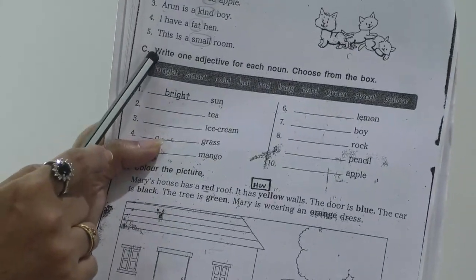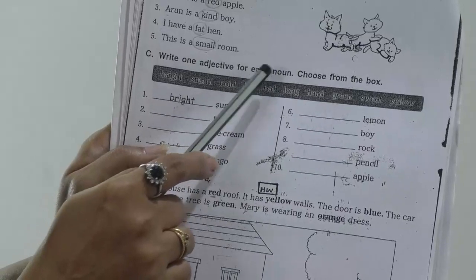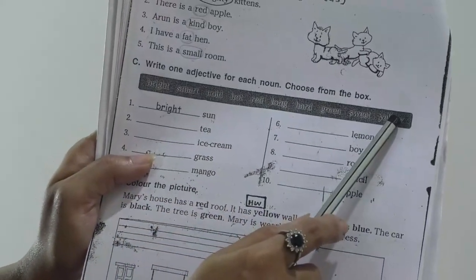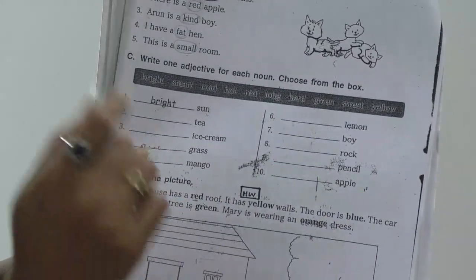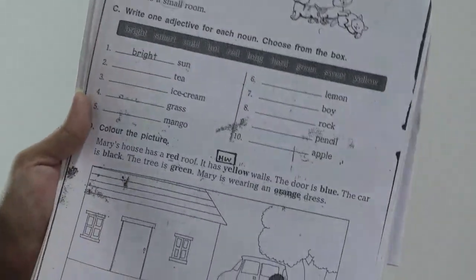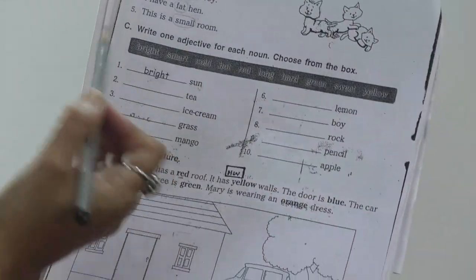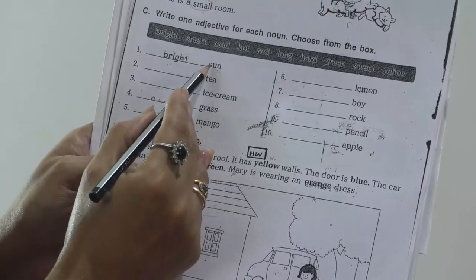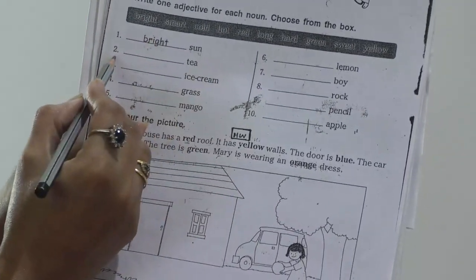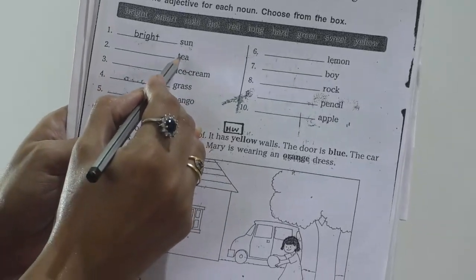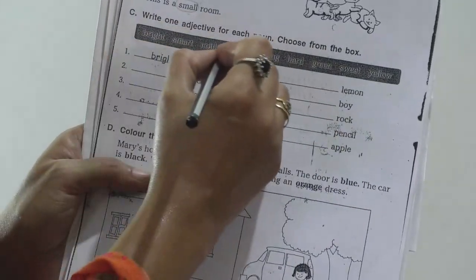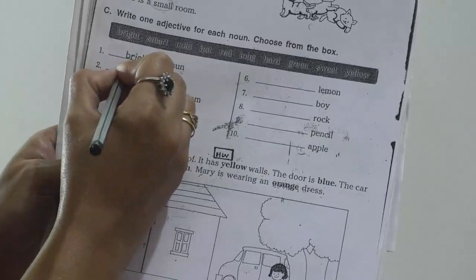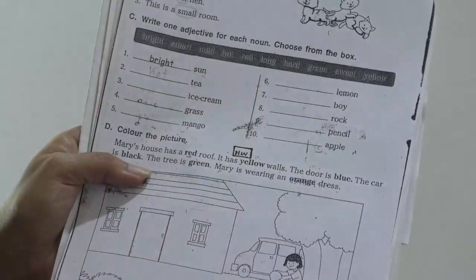After that, next question. Write one adjective for each noun. Choose from the box. Here is one help box and you have to use a correct or suitable adjective for the noun. Let's start. The first example already is solved here. Bright sun. How is the sun? Sun is bright. Next example, dash tea. Which adjective is suitable here? How is the tea? Hot we can say here. Right here hot tea.